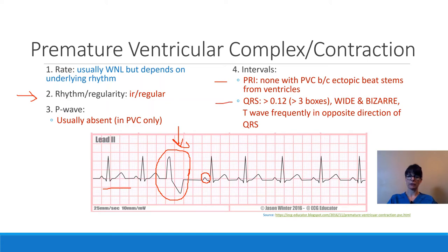The QRS is greater than 0.12 seconds and wide and bizarre — the shape is very different from anything seen in a normal complex. Also noticeable: the T-wave occurs in the opposite direction of the QRS. So if the QRS goes up from the isoelectric line, the T-wave goes in the opposite direction, which is pretty typical for a PVC.